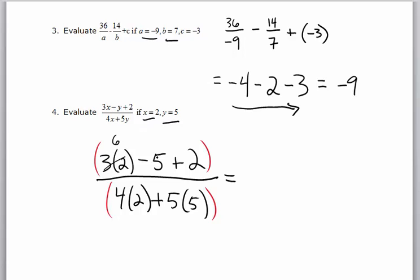6 minus 5 is 1, plus 2 is 3. So the numerator reduces to 3. Down here I'm going to multiply those two — that's 8 and that's 25. When I add those together I get 33.